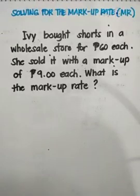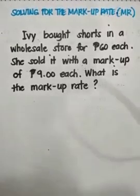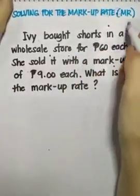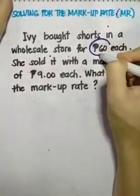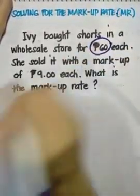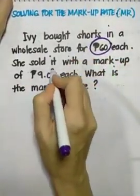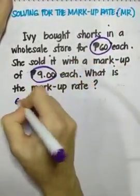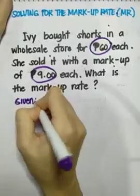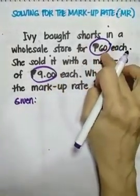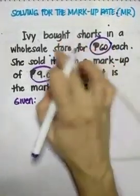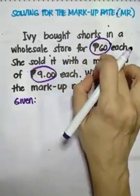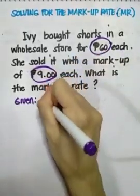First things first, we have to find out what is given in the problem and what is asked. Our given are the following: 60 pesos and 9 pesos. Let's identify what 60 pesos is. That's the price she paid for each, so this is our cost.